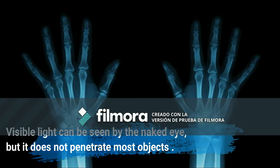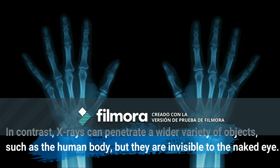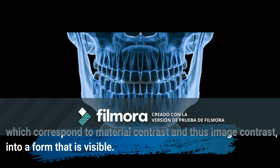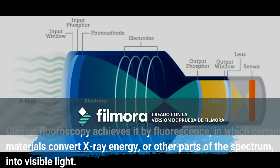Visible light can be seen by the naked eye, but it does not penetrate most objects, only translucent ones. In contrast, x-rays can penetrate a wider variety of objects, such as the human body, but they are invisible to the naked eye. To take advantage of the penetration for image-forming purposes, one must convert the x-ray's intensity variations, which correspond to material contrast and thus image contrast, into a form that is visible. Classic fluoroscopy achieves this by fluorescence, in which certain materials convert x-ray energy, or other parts of the spectrum, into visible light.